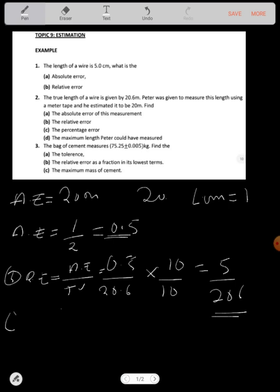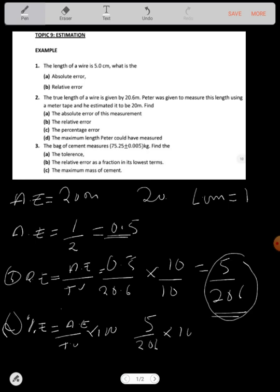Then C says find the percentage error. The percentage error is equal to absolute error over true value times 100. Just what you got here, then multiply by 100. So 5 over 206 times 100. You can divide: 2 can go into 100, that's 50. 2 can go into 206, that's 103. So on top you have 5 times 50, which is 250, and here you get 103.